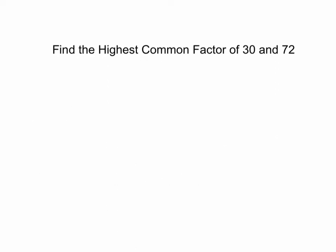The more standard way of finding the highest common factor is looking at factors of 30 and 72. So the factors of 30 are 1 and 30, and 2 and 15, 3 and 10, not 4, 5 and 6, and none in the middle.